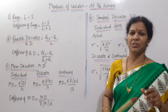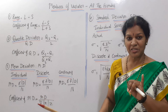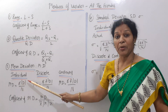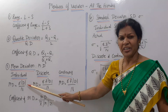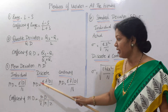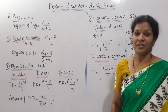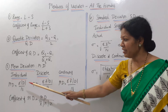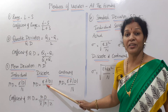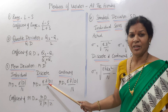Now coming to mean deviation, which we call MD. There are different series: individual, discrete, and continuous. For individual series, MD equals sigma mod D by N, where D means deviations taken from X bar. For discrete series, mean deviation equals sigma F into mod D by N — the same formula but with frequency F added after sigma, since discrete series includes frequency.